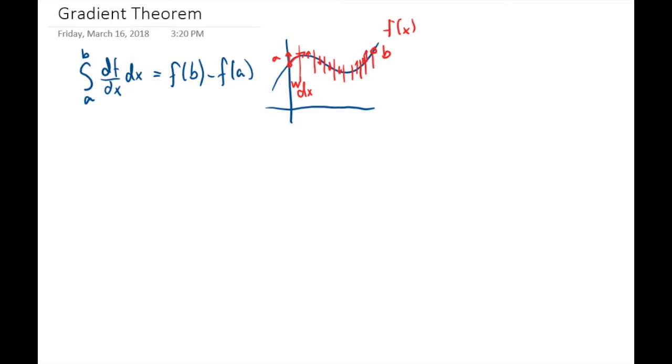And if we add all those tiny changes up, it should equal the total change from f of a to f of b.